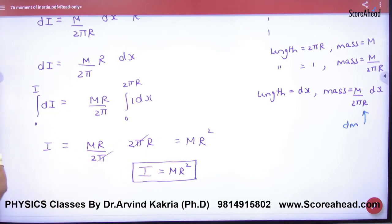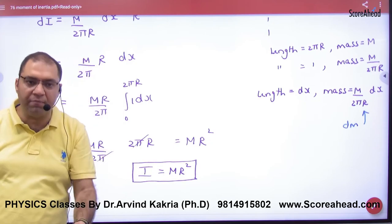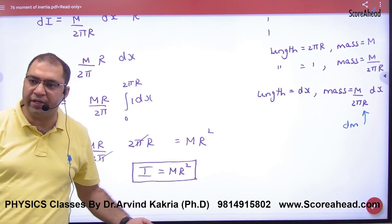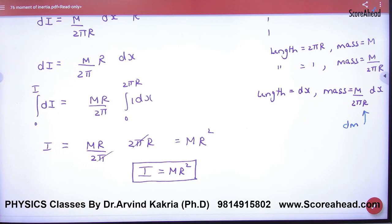MR². So if the ring's axis passes through the center, this formula is very important—remember that I = MR².